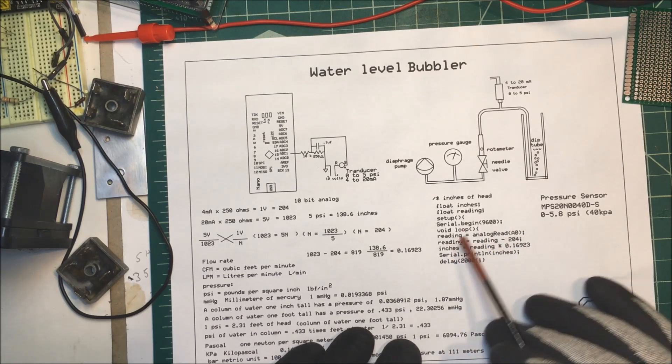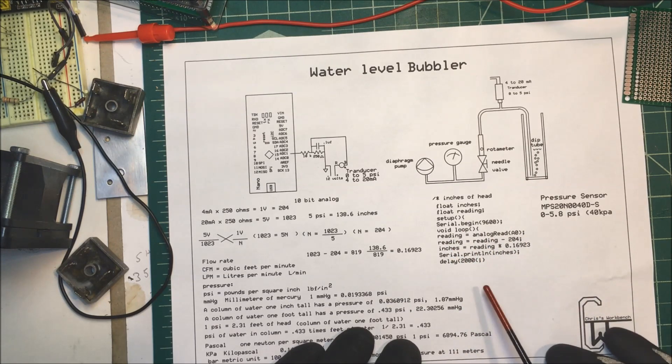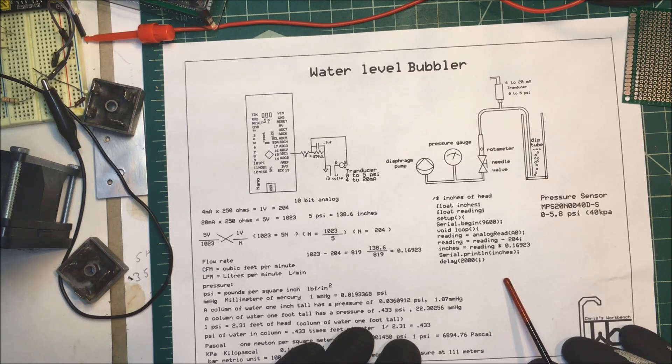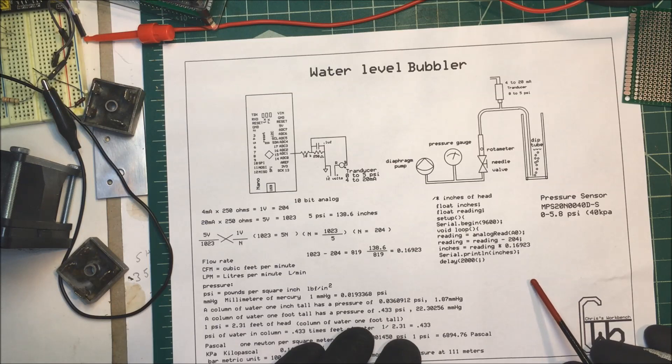Now, if you want, you could just map it, you can use the map function where you would map 204 to 1023 and then zero to 138.6. But when you map, it's integers only.